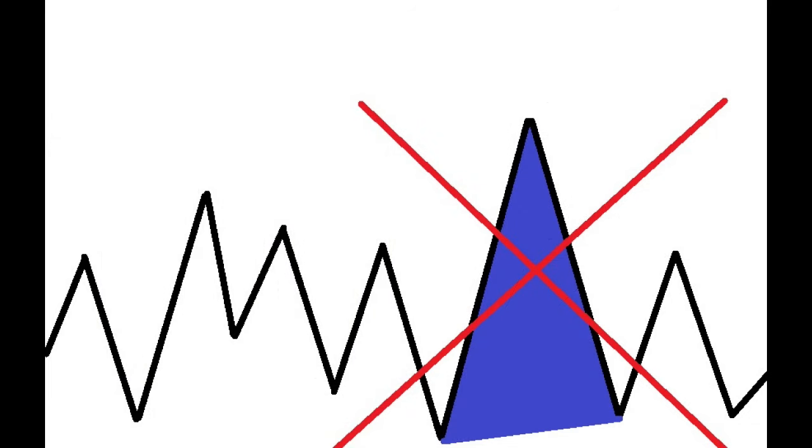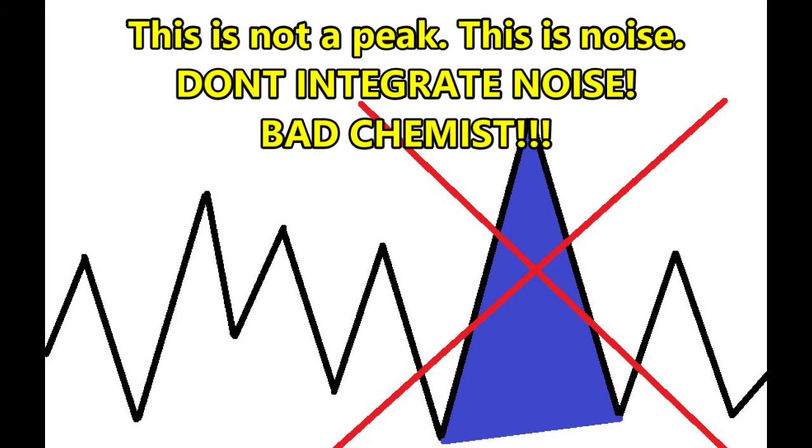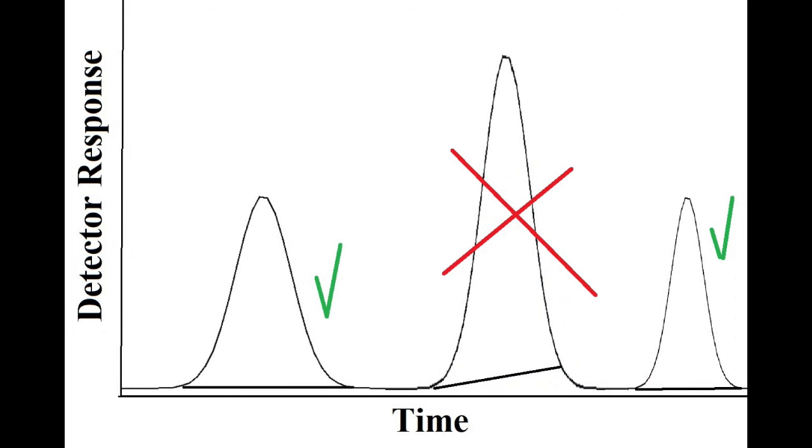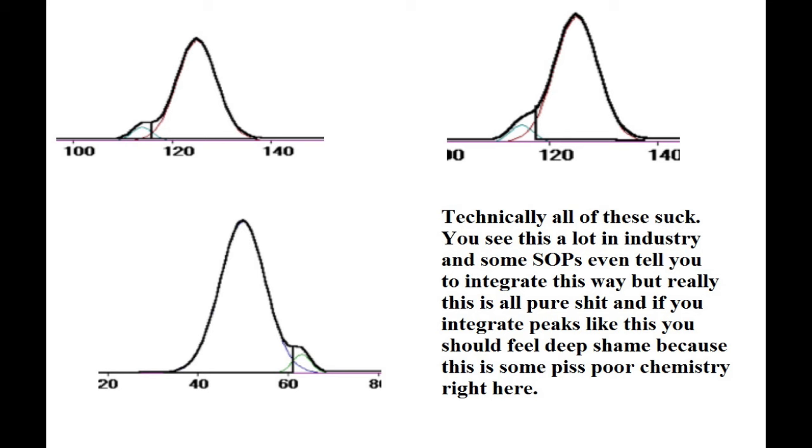It is absolutely not acceptable to zoom into the baseline at the retention time of your expected analyte, integrate whatever happens to be there, and say that the analyte was present. No, it really wasn't. You were just integrating noise. This is a cardinal sin in chromatography. Another unforgivable heresy is when chemists tweak the integration so that it's sloped and not baseline to baseline. In other words, cooking the concentration data. It is also unacceptable to integrate a peak if it overlaps with another peak, since there is no way to tell where one stops and another starts.